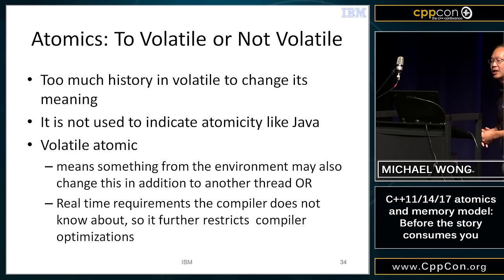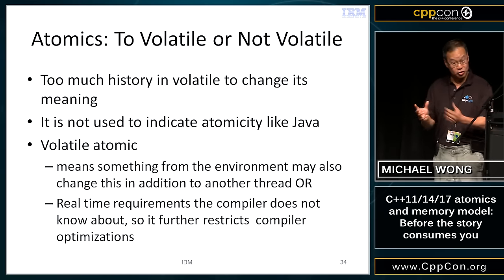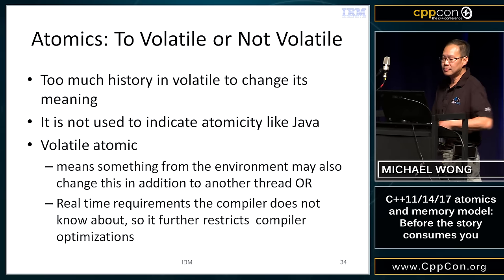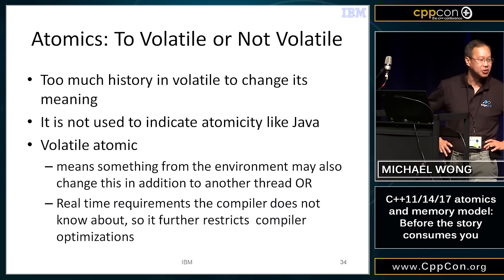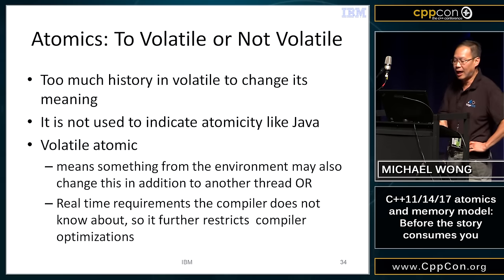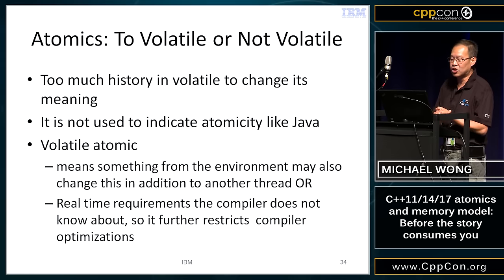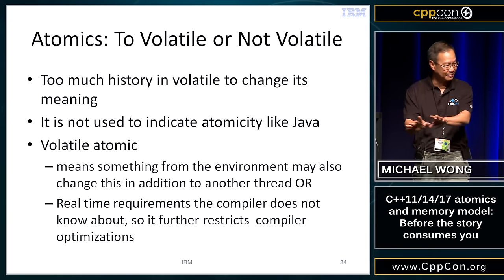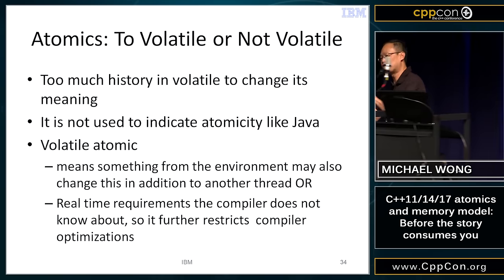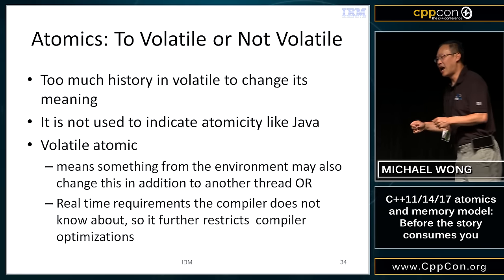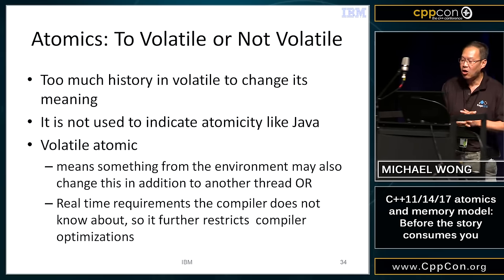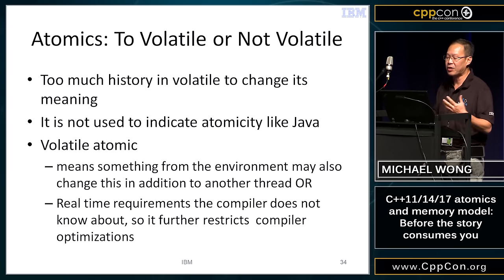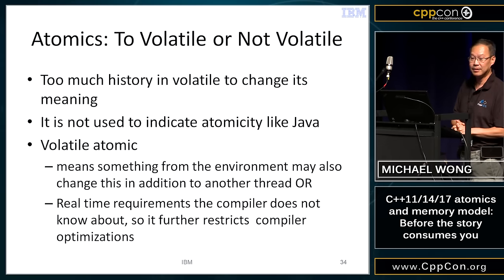We didn't reuse the keyword volatile for atomics because there's too much history on volatile — it already means certain things to different compilers and systems. Java has already started using volatile as the keyword for atomics, and there's nothing we can do about that. You can have volatile atomics: atomic says I could be changed by some other thread, while volatile says something in the environment can change me, which further restricts the compiler's opportunities. That's what happens in the Linux kernel.